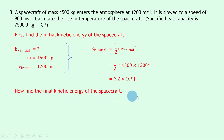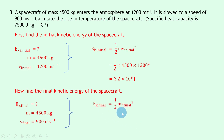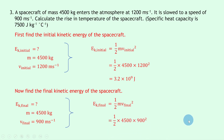We then want to find the final kinetic energy of the spacecraft. The mass m = 4500 kilograms again and the final speed is 900 meters per second. Writing down our equation: EK_final = ½mv_final². Substituting in: ½ × 4500 × 900² gives an answer of 1.8×10⁹ joules.